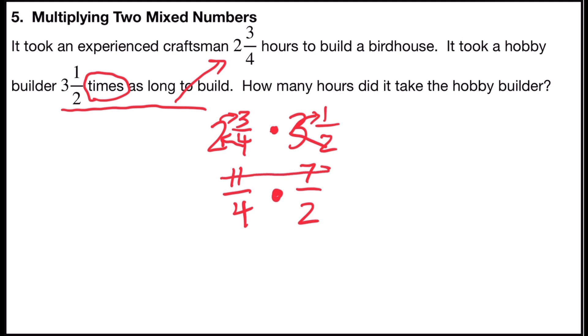Multiply across the top: eleven times seven is seventy-seven. Multiply across the bottom: four times two is eight.